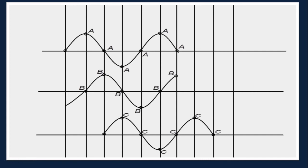At this point of time, particle A starts moving towards the initial position. But particle B is now moving towards the other extreme position, and particle C is moving towards the initial position from the first extreme position. So you see, at the same time, every particle is at a different position. This creates a wave.